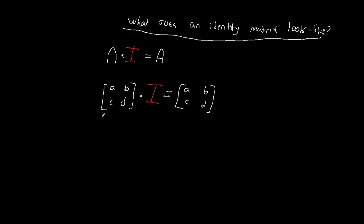So what do we know before we do anything else? We know that the input matrix is a two-by-two matrix — it's square because the rows and columns are the same. We've defined A as two-by-two, and based on our definition, the output is also a two-by-two matrix. So what do we know about I given these two pieces of information?